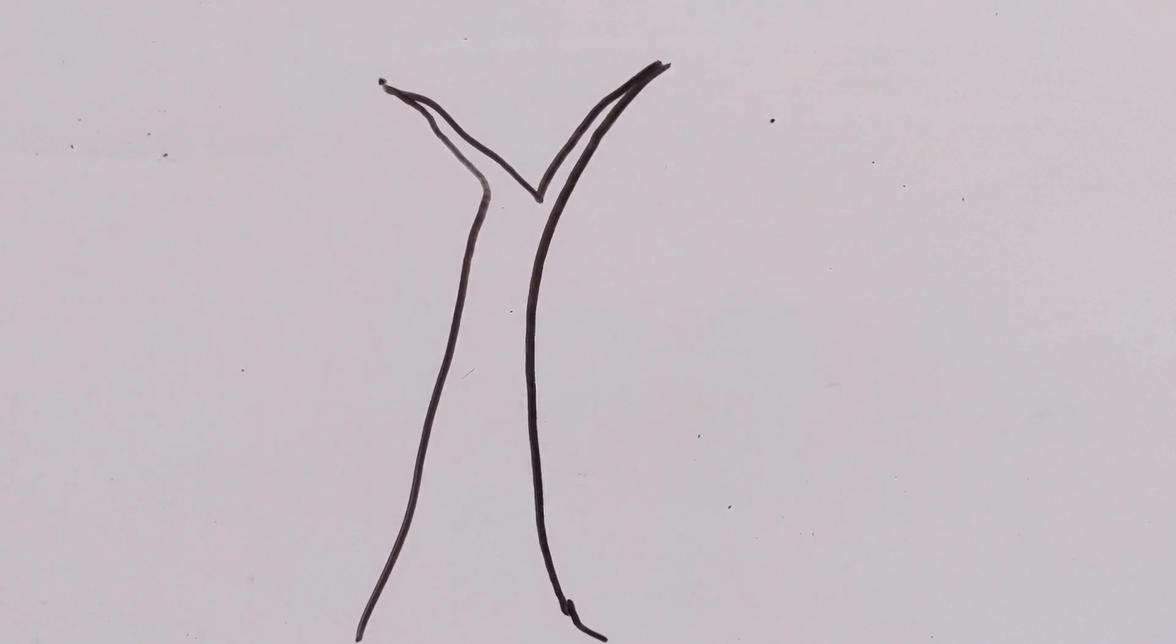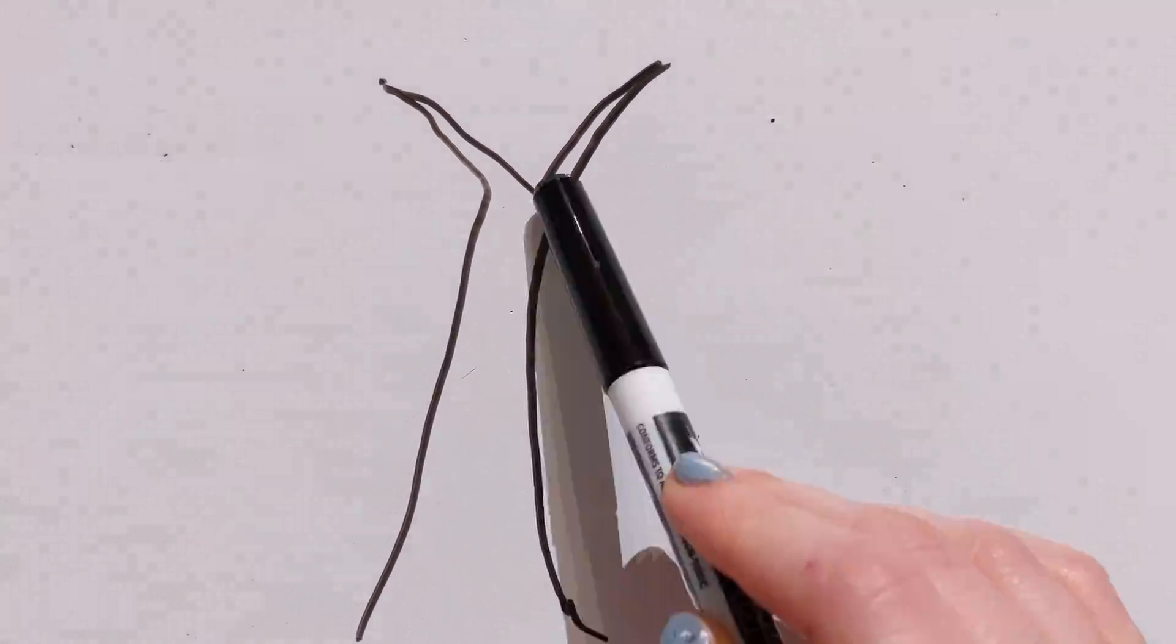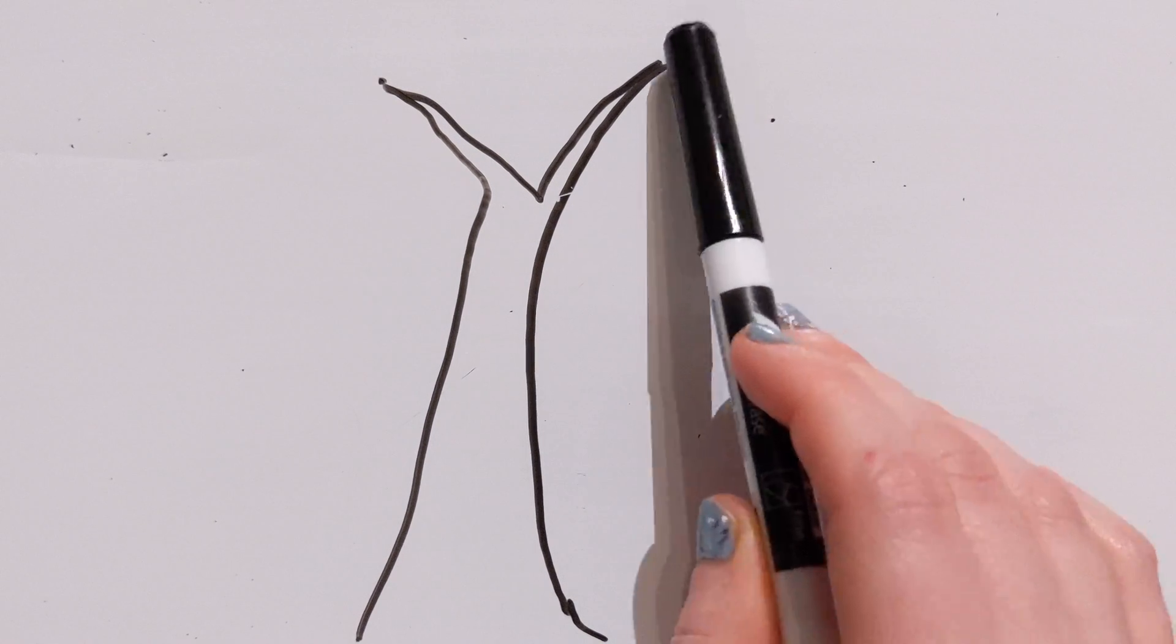So you want to think of your branches like they are triangles. They are widest at the base and smallest at the tip. Widest right here, smallest out here at the tip.